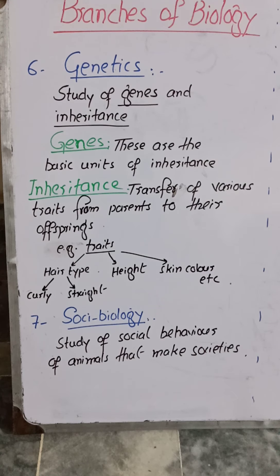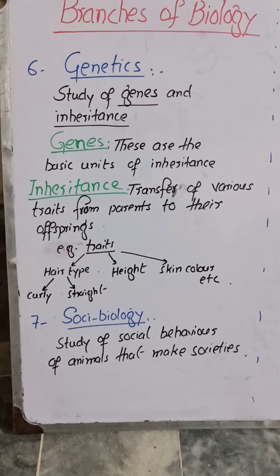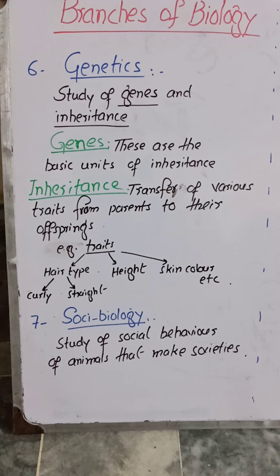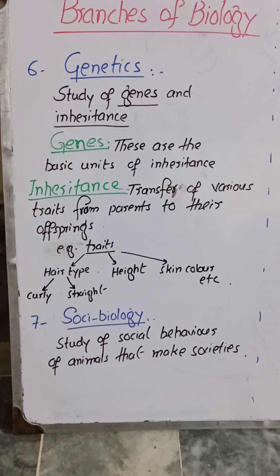There are many traits present in human beings which get transferred from parents to their offspring. Some examples include hair type, height, and skin color. Hair type may be curly or straight, transferred from either parent. Height — whether shorter or taller — may also be transferred. Skin color may be black, light wheat, dark wheat, or fair — whatever the case, it can be transferred from parents to their offspring.